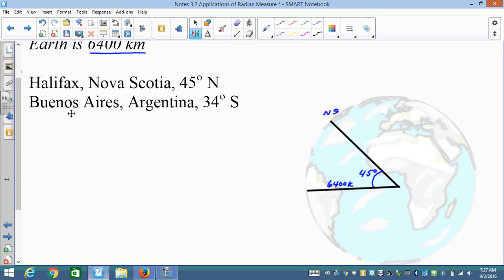And Buenos Aires, Argentina, they're claiming to be 34 degrees south of the equator. So we get 34 degrees south. Now, what we're wanting, though, is this full-out value. So our angle theta equals 45 plus 34, which is 79 degrees.